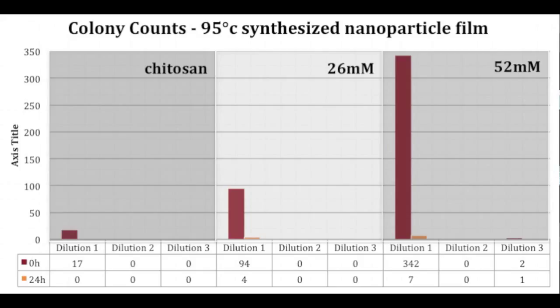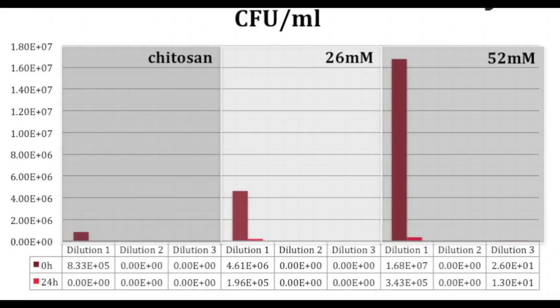The comparison of the zero hour and 24 hour cell culture counts revealed that all three film surfaces managed to kill bacteria, with the 26 millimolar concentration film killing 90 cell cultures and the 52 millimolar killing over 330 of these cell cultures. This translates into colony forming units ranging from 0 to 3.4×10^5 colony forming units per milliliter, which is well within our design goal.